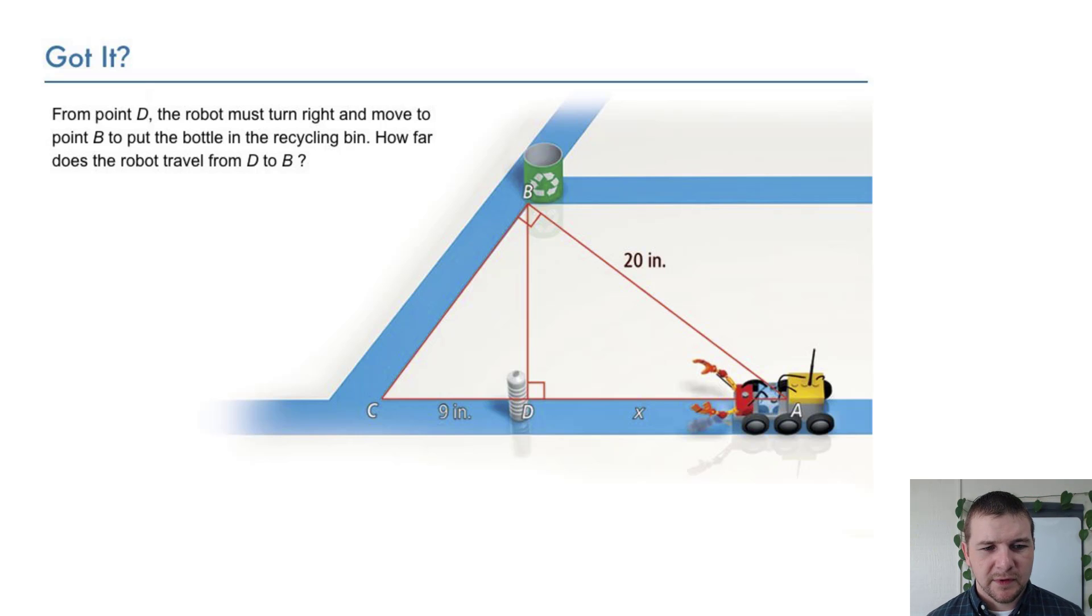Your turn. From point D the robot must turn right and move to point B to put the bottle in the recycling bin. How far does the robot travel from D to B?